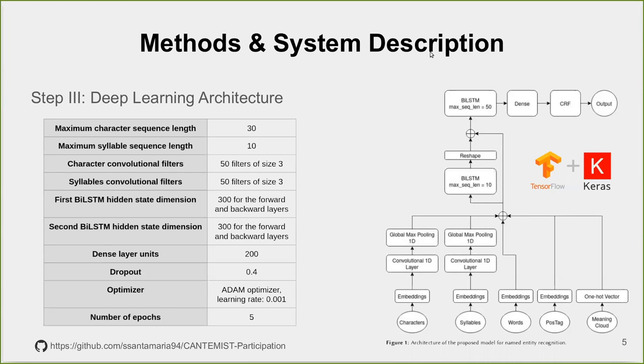First, a bidirectional long short-term memory layer receives the input features. The sequences of characters and syllables are previously processed by a convolutional and global max-pooling block for a maximum sequence length of 10. The reshaped output of this layer is concatenated with the input features, this time for a maximum sequence length of 50, and serves as the input for a new bidirectional LSTM.